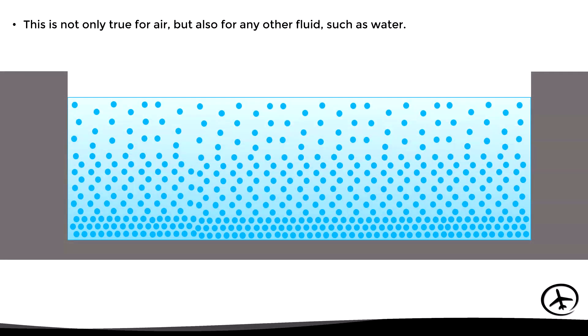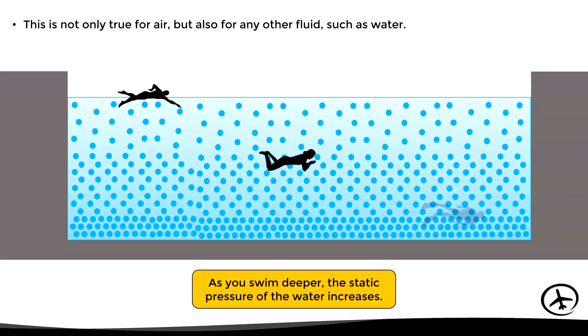This phenomenon not only occurs with air but also with any other fluid such as water. Here we have an example of a swimming pool — the way in which the water molecules behave is quite similar to air molecules in the atmosphere. This means that a person swimming on the surface will experience less static pressure than one swimming at depth, and we can actually feel that change in static pressure as we submerge deeper, especially in the ears.